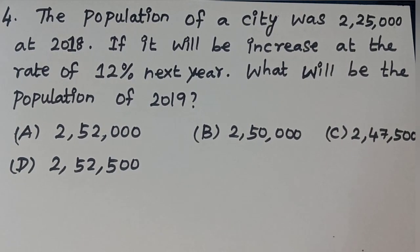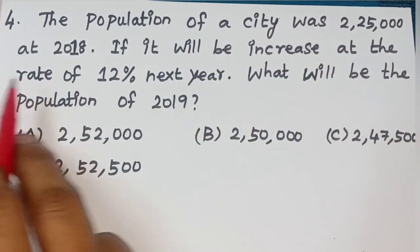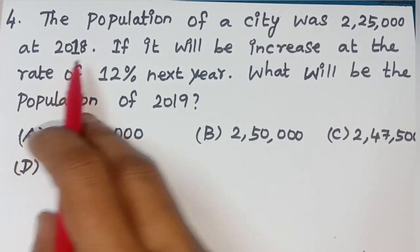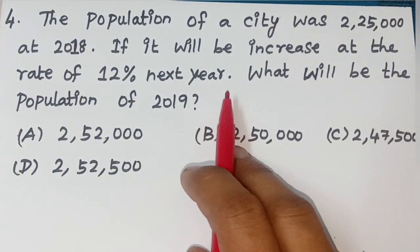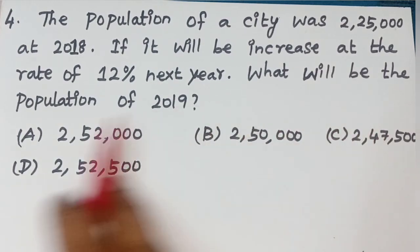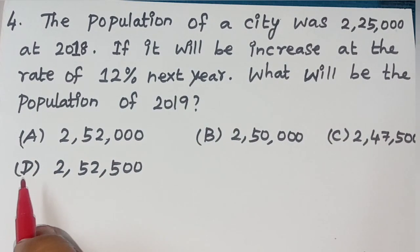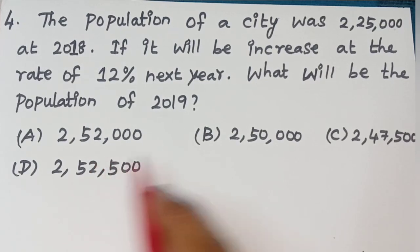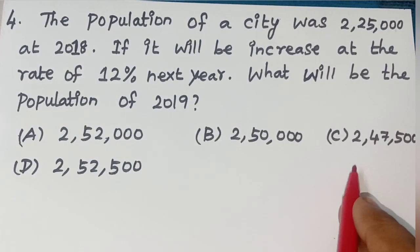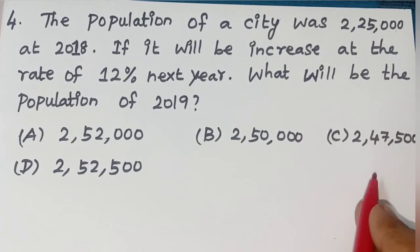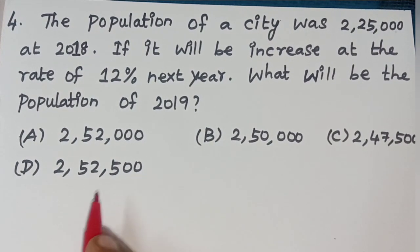Fourth question: The population of a city was 2,25,000 in 2018. If it increases at the rate of 12% the next year, what will be the population in 2019? Options: A) 2,52,000, B) 2,50,000, C) 2,47,500, D) 2,52,500.